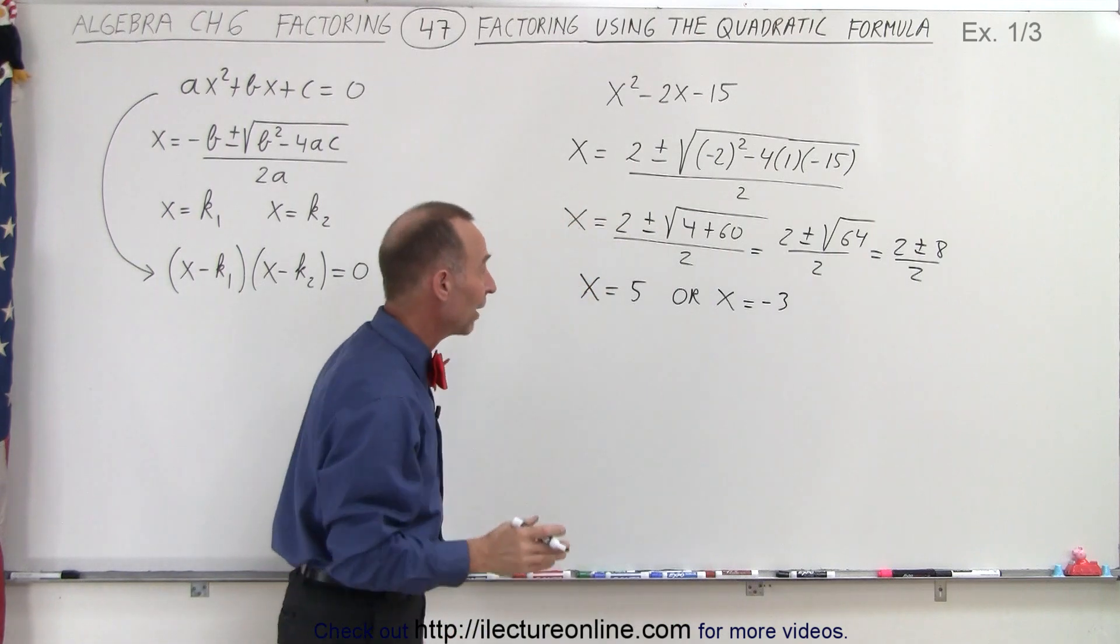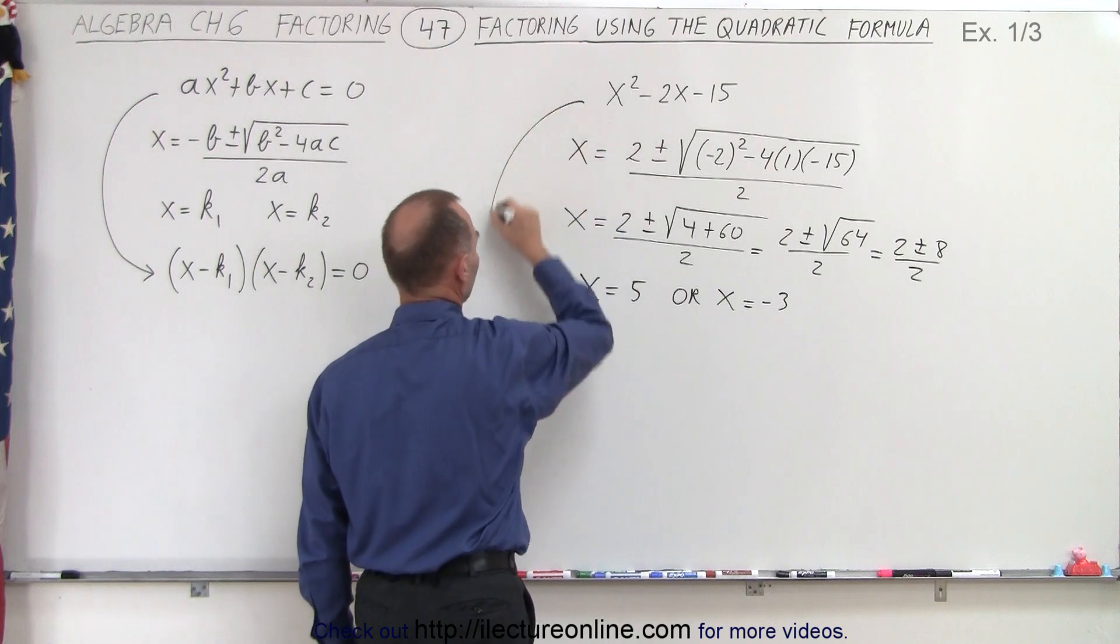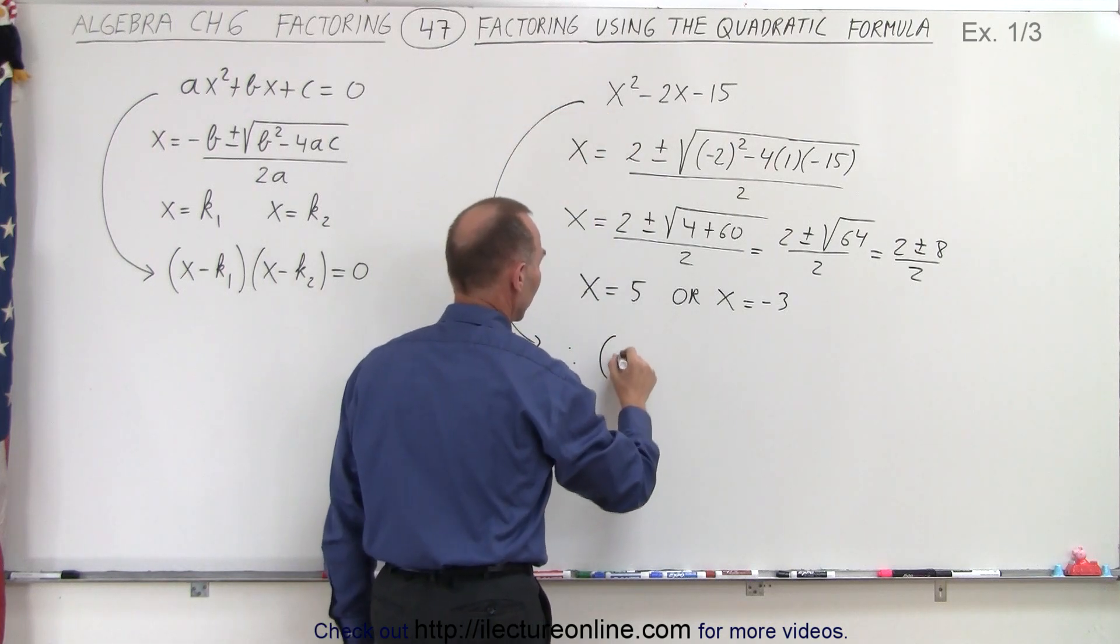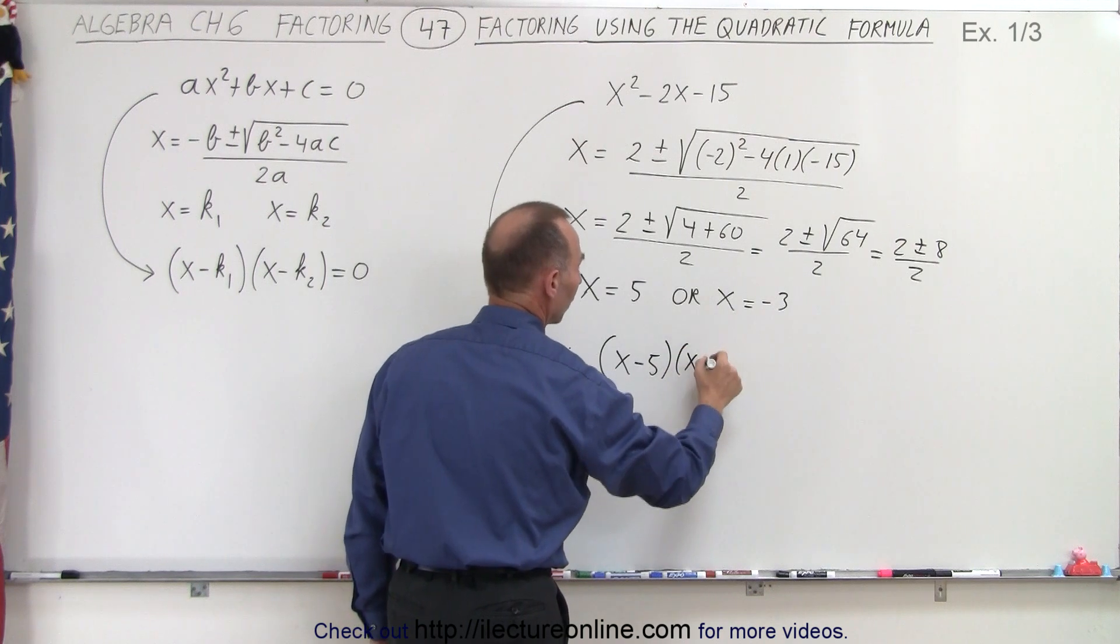So we found the two values, k₁ and k₂, and so therefore we can write that the factored form can be written as (x - 5)(x + 3).